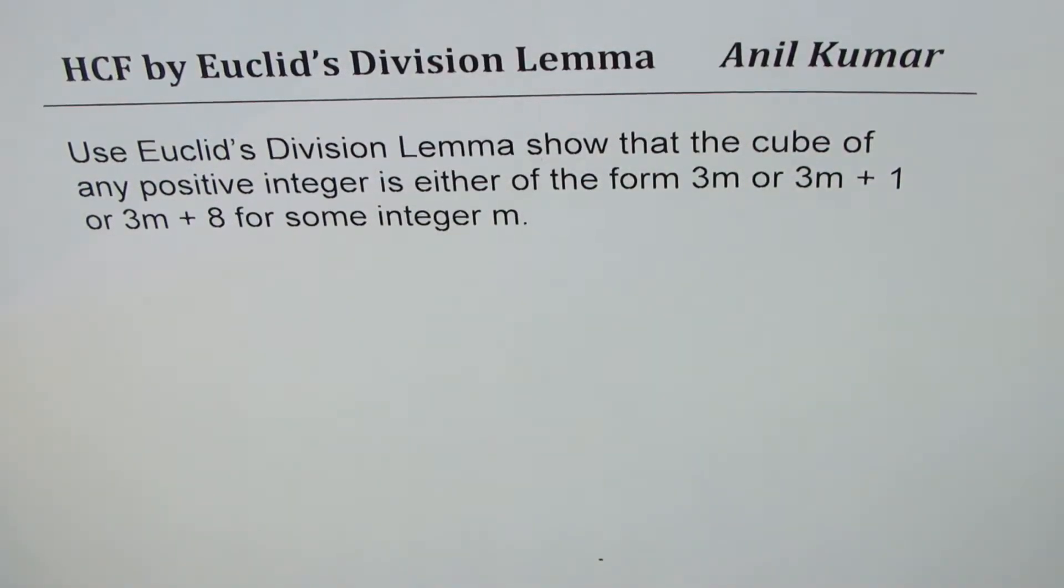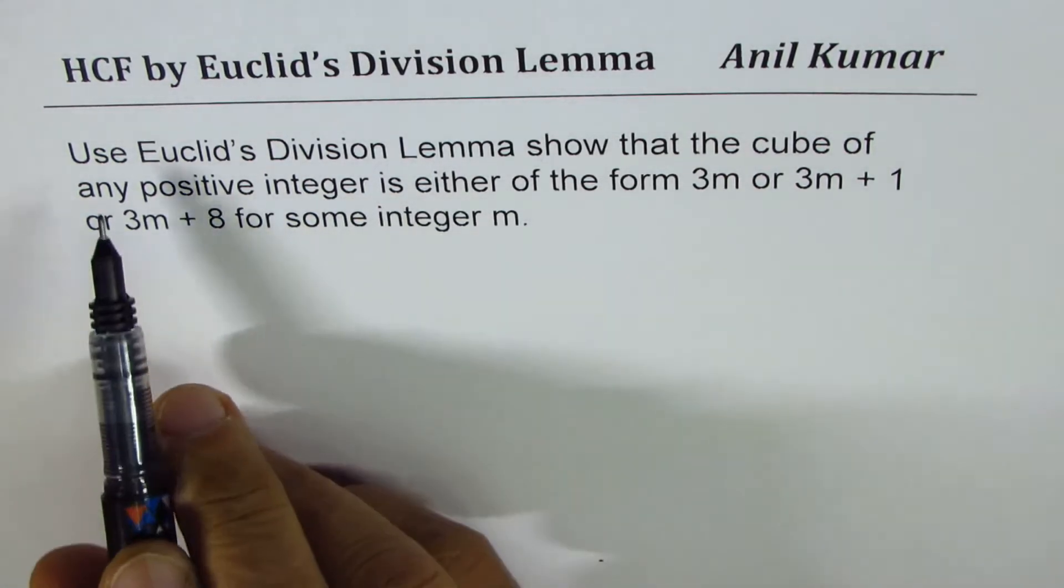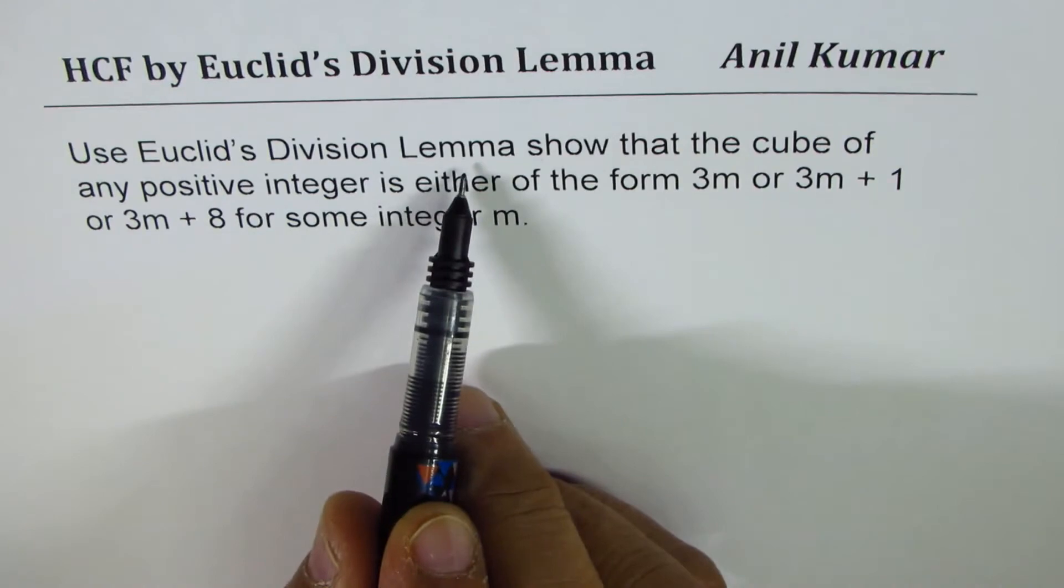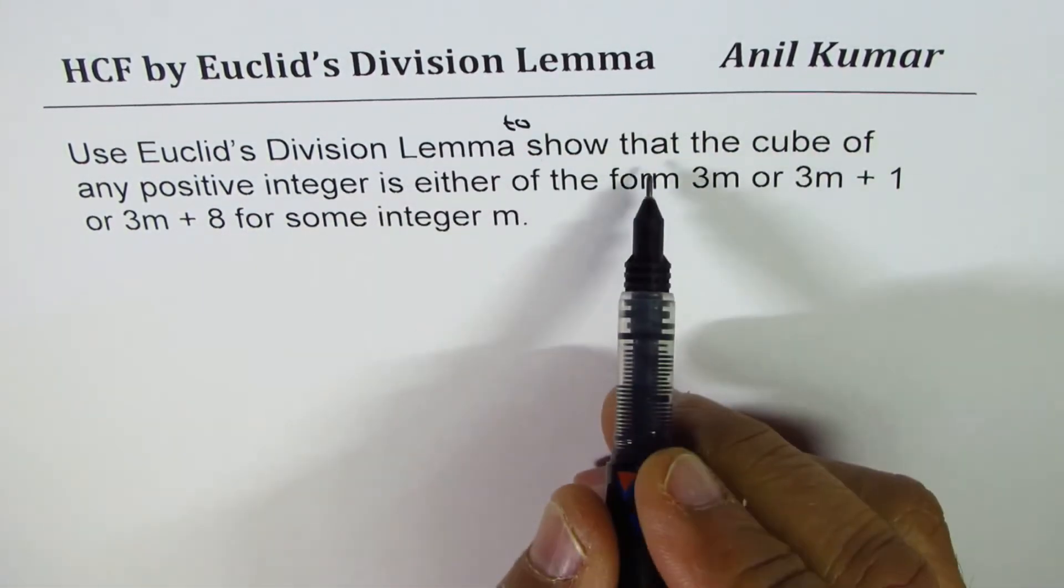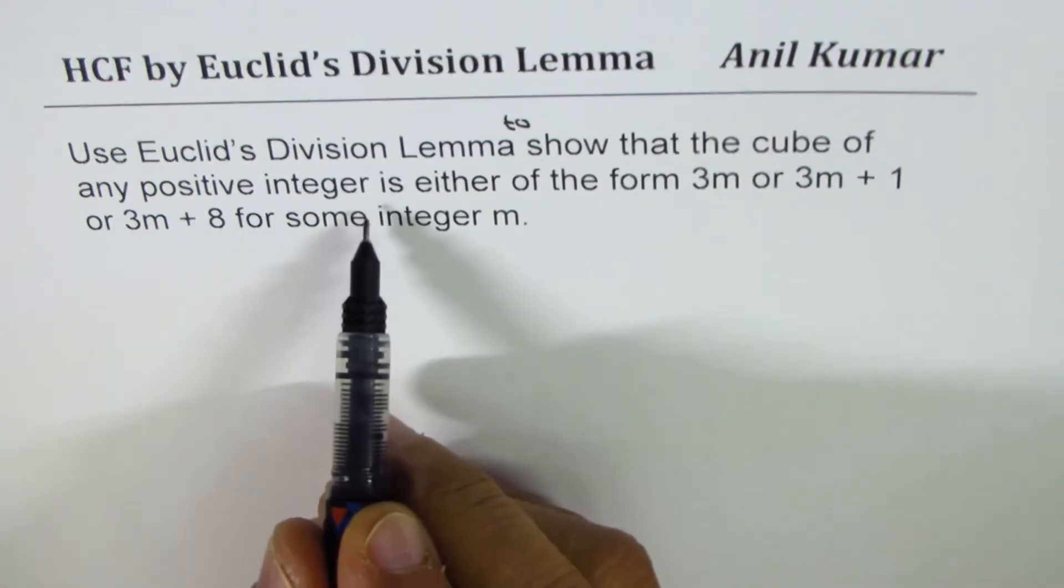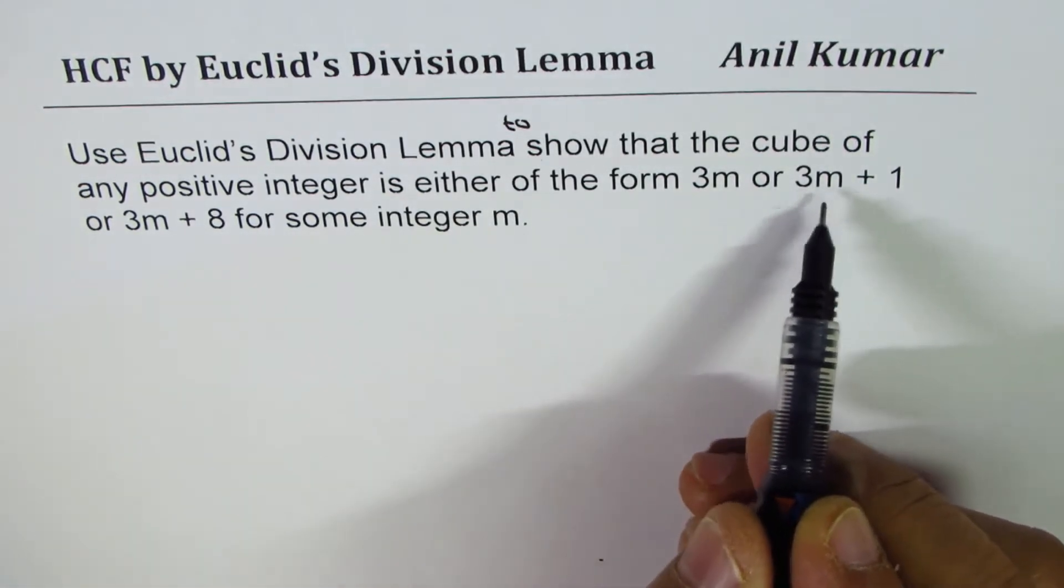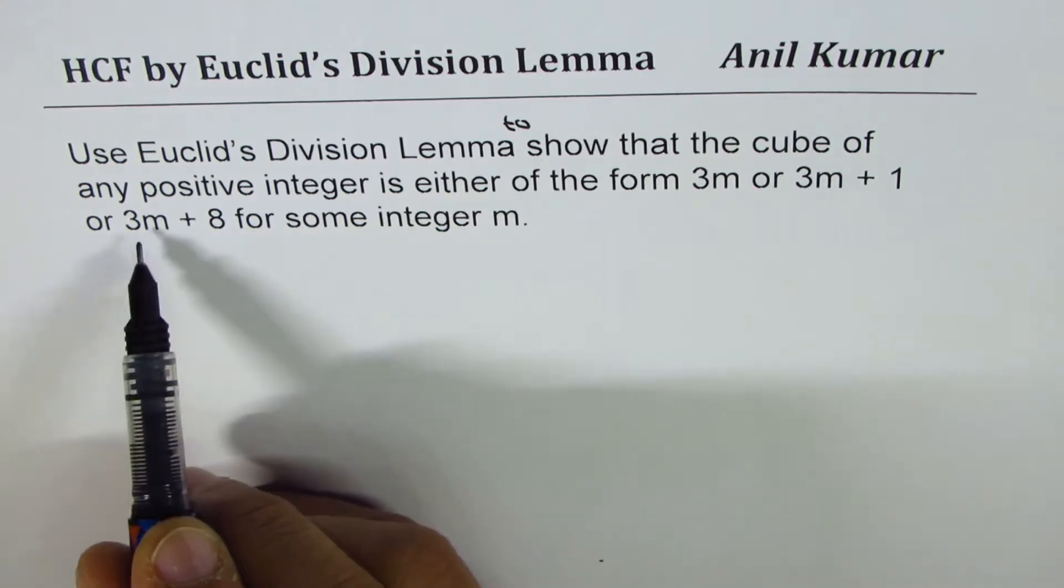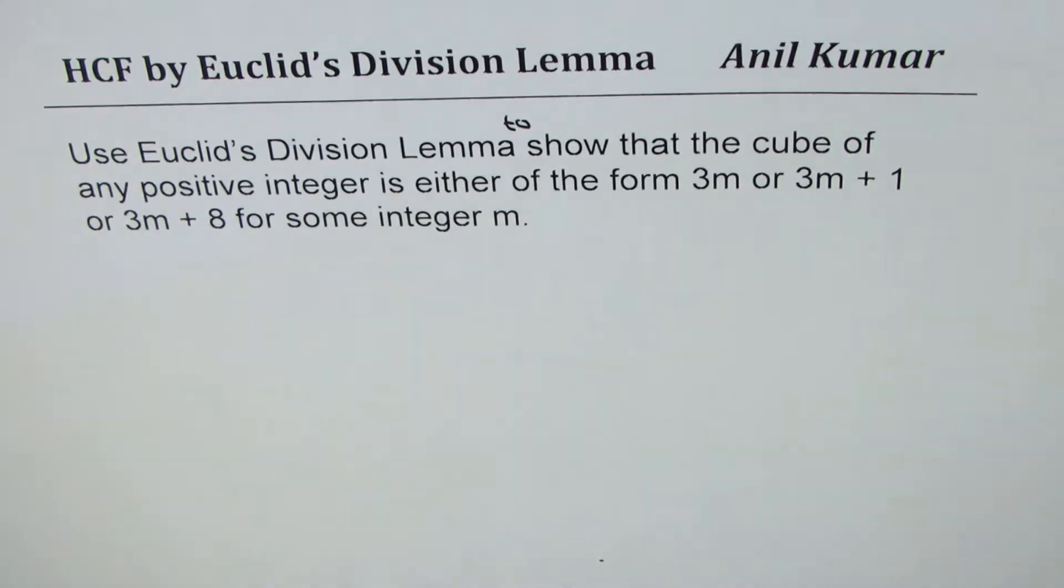I'm Anil Kumar sharing with you application questions based on Euclid's division lemma. The question is, use Euclid's division lemma to show that the cube of any positive integer is either of the form 3m or 3m plus 1 or 3m plus 8 for some integer m.